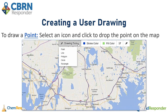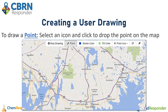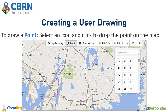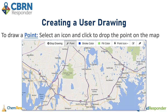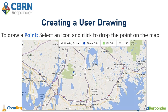If you would like to draw a point, select that drawing tool. We have hundreds of icons you can pick from, ranging from facilities to equipment to pretty much any icon you could think of that you would like to put on your event map. You simply click and the point will drop where you've clicked.